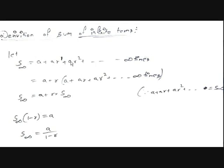So we can write S∞ = a + r·(a + a·r + a·r² + ...). The series inside the brackets is the same as S∞ itself. So S∞ = a + r·S∞. Rearranging: S∞ − r·S∞ = a, which gives S∞·(1 − r) = a. Therefore, S∞ = a / (1 − r). Easy, right?